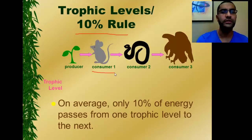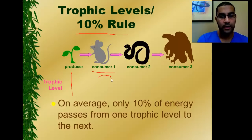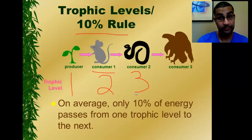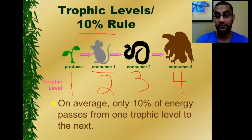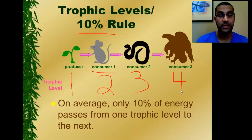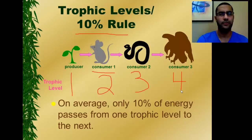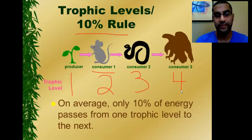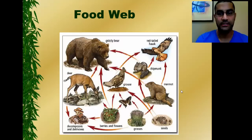Make sure you understand the 10% rule — only about 10% of energy passes from one level to the next. To review: producers are trophic level 1, the primary consumer or herbivore is trophic level 2, the first carnivore is introduced at trophic level 3 as the secondary consumer, and trophic level 4 has the tertiary consumer or top carnivore. Decomposers, if represented in the food chain, would take nutrients from all trophic levels, and they typically fall into bacteria and fungi.